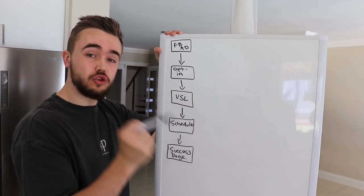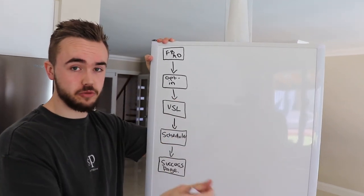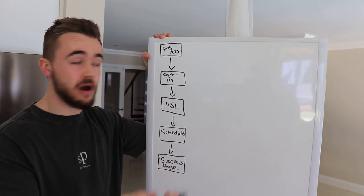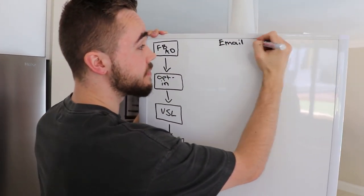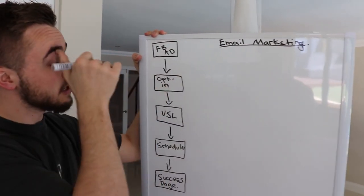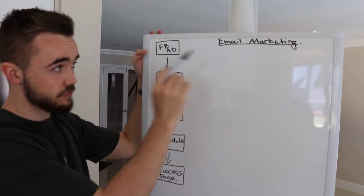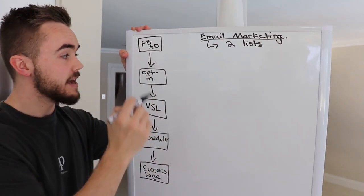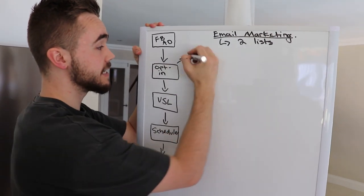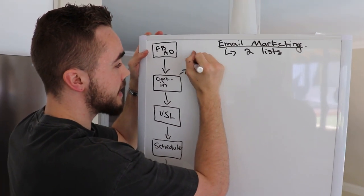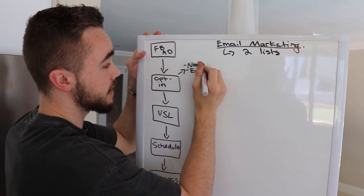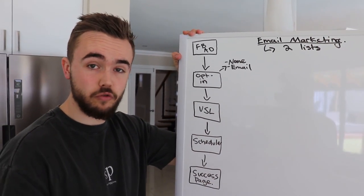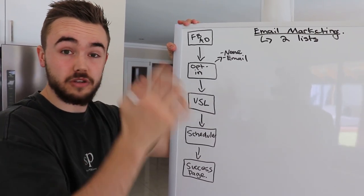Now let's cover email marketing, another super important aspect of making the entire funnel as successful as possible. Since we're paying to get these leads, we want to get as much out of them as possible. Email marketing is a really good way to do that. You'll have two lists managed through email marketing software — I personally use and recommend ActiveCampaign. The lists are built from the opt-in page where you collect name and email from prospects.